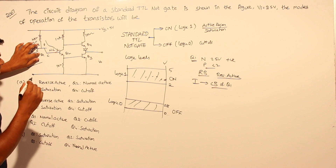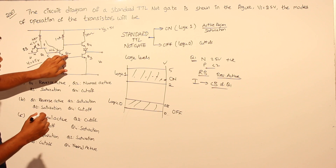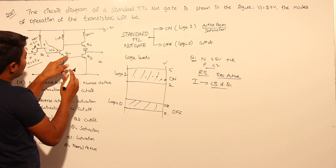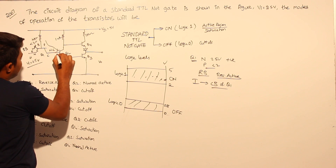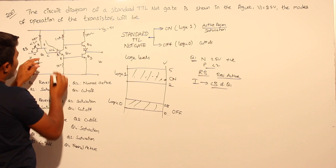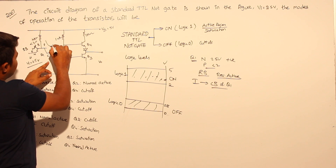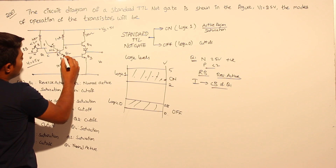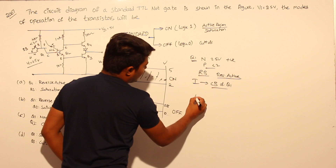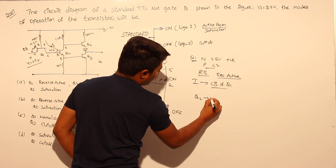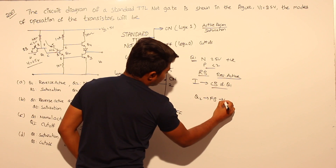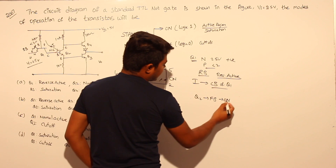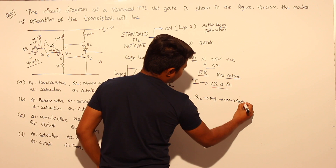For Q2, identifying the emitter, base, and collector: a large amount of current flows through Q2. Q2 is in forward bias and in the on state. When Q2 is in the on state, it is said to be in the active region or saturation region.